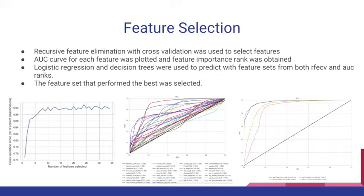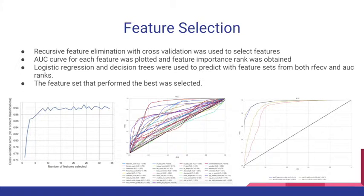Feature selection is an important part of the machine learning process in which the most important features are selected from a collection of features. Having too many irrelevant features can decrease the accuracy of the model, so we performed feature selection to predict with higher accuracy and to reduce overfitting. We used Recursive Feature Elimination with Cross Validation (RFECV) and also another algorithm called the AUC curve for feature selection.